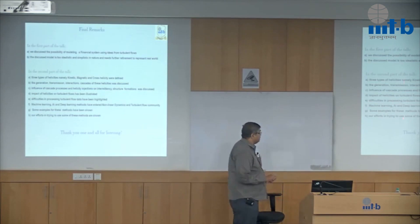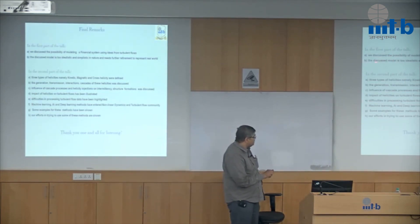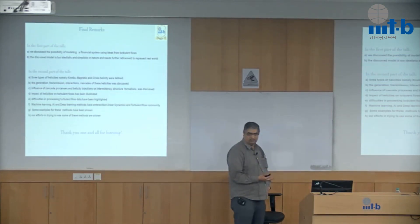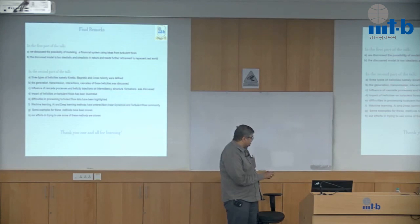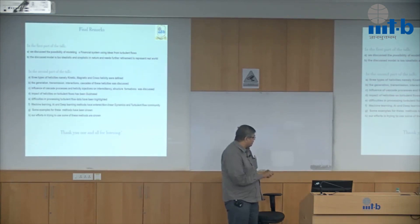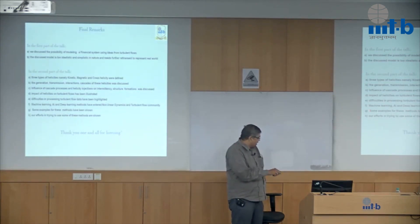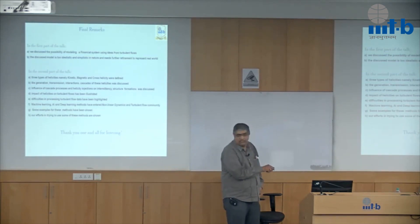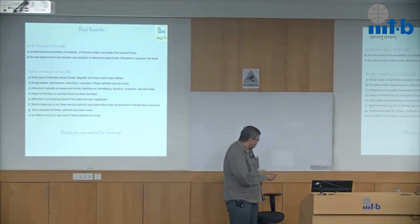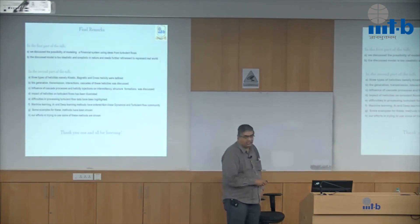In summary, in the first part of the talk we discussed the possibility of modeling a financial system — this model was too idealistic and simplistic and does not represent the real world. In the second part, we introduced three helicities, their generation, transmission, interactions, and cascades; their influence in structure formations; intermittency; and difficulties in turbulent flow data especially for identifying structures. The need for machine learning and other techniques was mentioned with examples already using these techniques in nonlinear dynamics and chaos. Our efforts in this direction have been shown. Thank you.